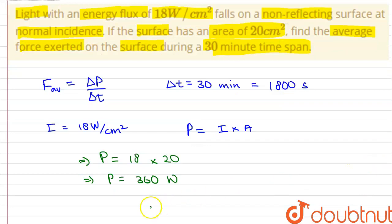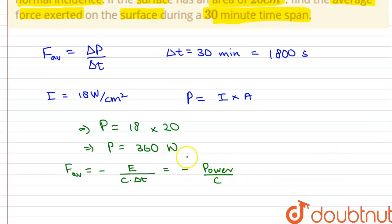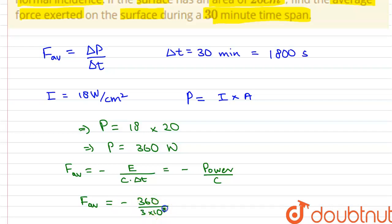Therefore, we can write that average force equals negative of E divided by c multiplied by delta t, which is also equal to negative of power divided by c. Substituting the values, F_average comes out to be negative of 360 divided by 3 into 10 to the power 8.